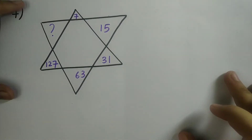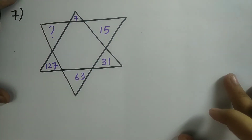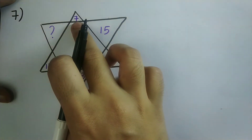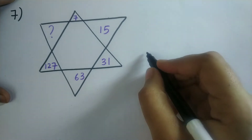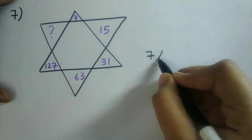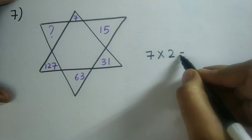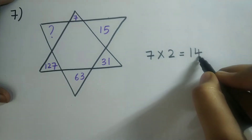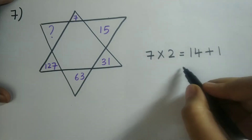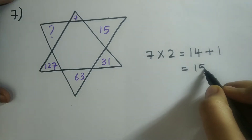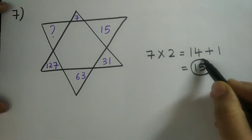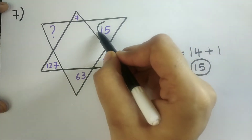The logic for this sum is: first I should write the number given in this box, which is 7. So 7, I should multiply this number with 2. Into 2 means I will get the answer as 14. Then I should add the answer with 1. So 14 plus 1 is equal to 15. So this value is matching with the next box value.